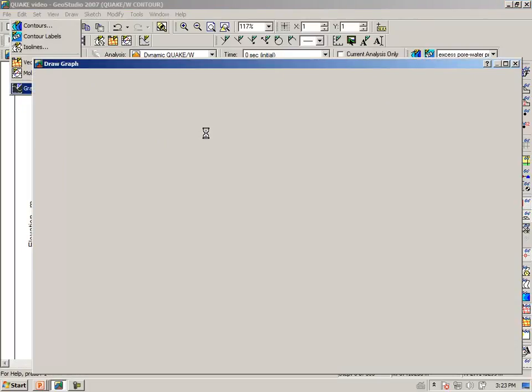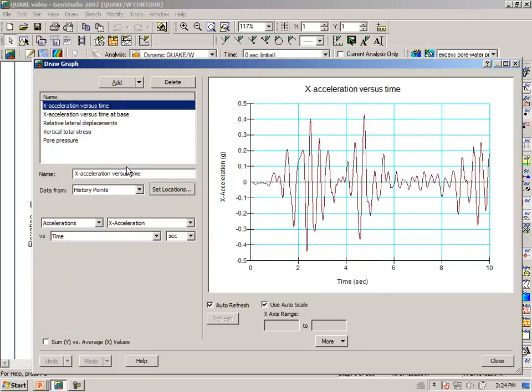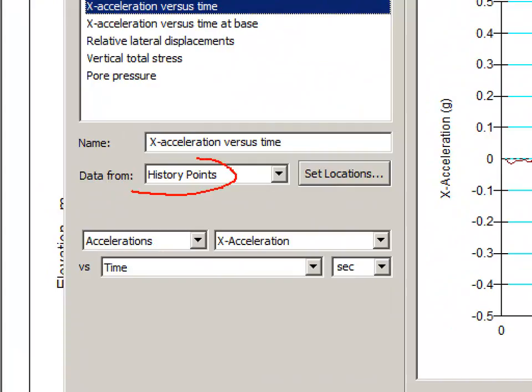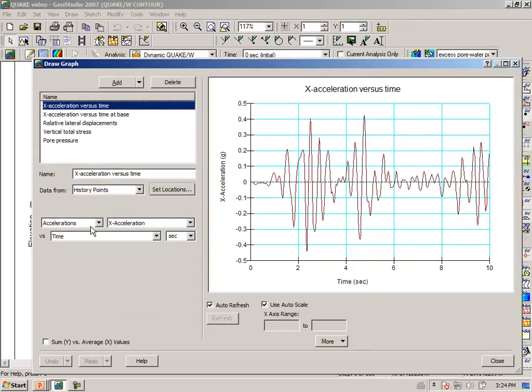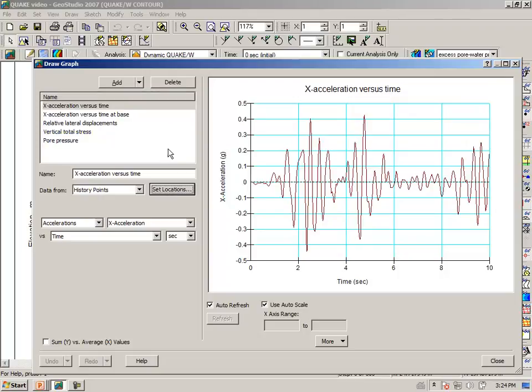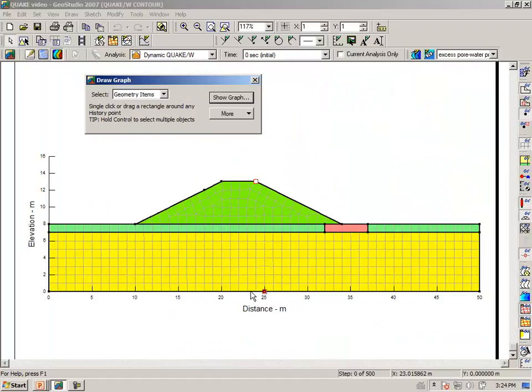We can draw a graph and select x acceleration versus time. We are plotting history point data, accelerations, x acceleration versus time. The location we have selected is the history point at the crest. That is the acceleration at the crest. A second graph, x acceleration versus time at the base. Everything else is the same except the location here now is at the base.